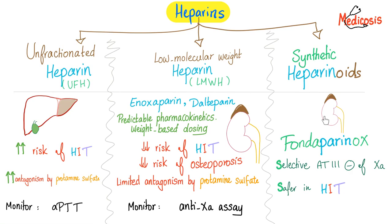If the patient has kidney failure and I have to use heparin, go with the unfractionated heparin because it's liver, not kidney. With the low molecular weight heparin, there is low risk of HIT — lower than unfractionated heparin, but the risk is not zero. However, the best thing for a patient with risk of HIT is fondaparinux. A lower risk of osteoporosis exists with the low molecular weight heparin. There is limited antagonism by protamine sulfate. How do we monitor the low molecular weight heparin? Don't say PTT — you monitor the low molecular weight using anti-factor 10A activity assay, because the sole purpose of the low molecular weight heparin was to inhibit factor 10 only.